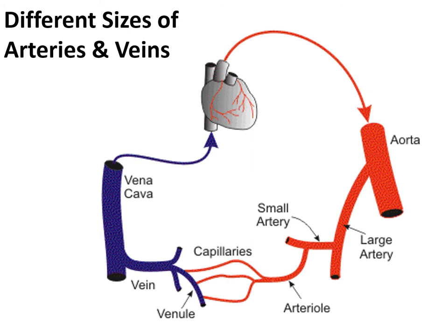There are different types of arteries and different types of veins, as well as different types of capillaries. This diagram depicts how the sizes of arteries and veins change throughout the systemic circulation. As blood is pumped from the heart, it goes into the largest vessel called the aorta — the largest artery and the largest vessel in our bodies. The aorta diverges to give off several large arteries, which then diverge into medium-sized and smaller arteries.